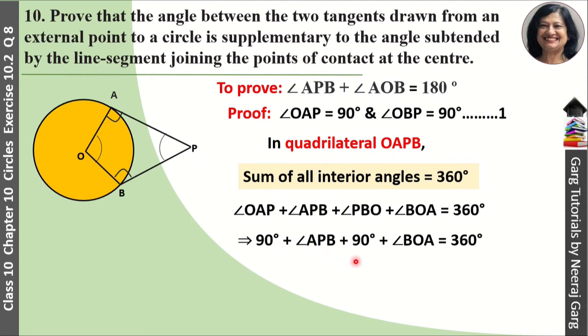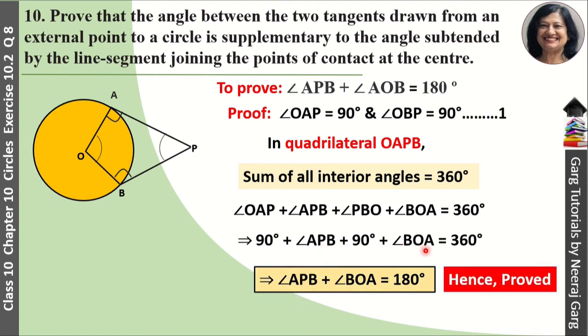When we take 90 plus 90 to the other side and subtract, we get angle APB plus angle BOA equals 180 degrees. And this is what we had to prove.